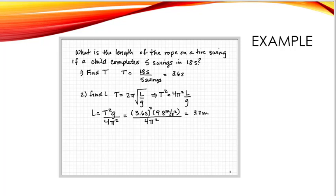And then we want to find the length by using the equation period is equal to 2π times the square root of L over G. You can rearrange that a little bit, and plug in the period acceleration due to gravity. Divide both of those by 4π squared, and you get 3.2 meters long for the string length.